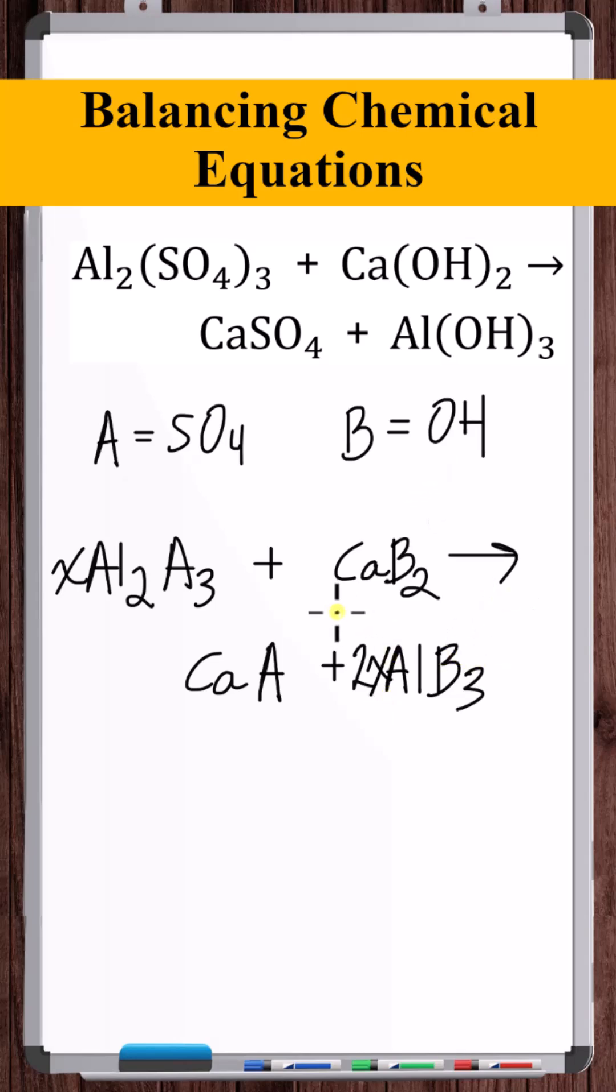Okay, now we can see that the B group occurs by itself on the reactant side in this compound. And it also occurs by itself on the product side in this compound. So we can relate these two coefficients. So if on the right side, we can see there's 6x B groups. So here, there also needs to be 6x B groups.